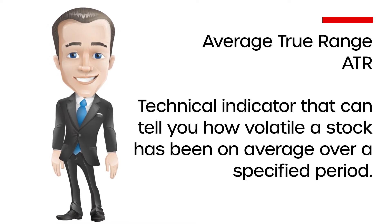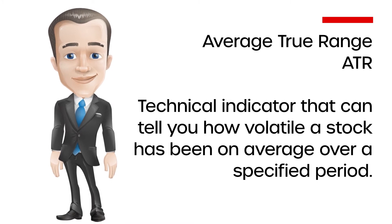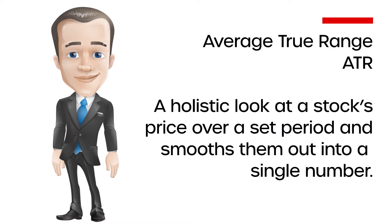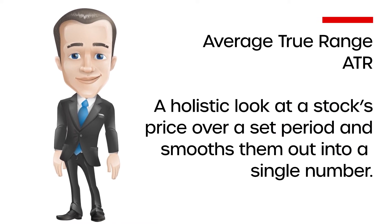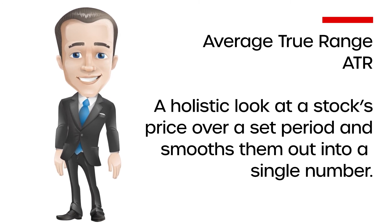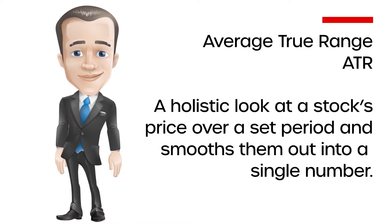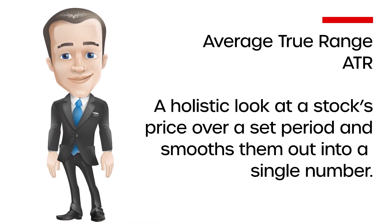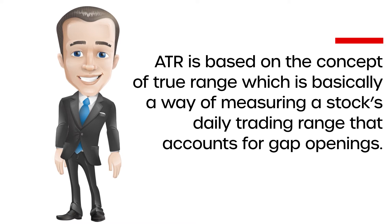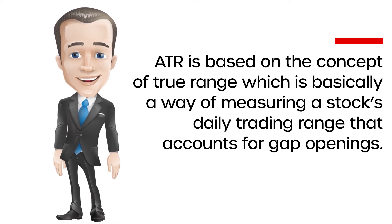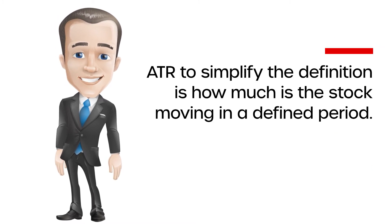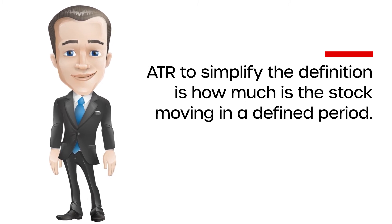Average True Range, or ATR, is a technical indicator that can tell you how volatile a stock has been on average over a specified period. ATR is used for setting exit levels as part of your risk management strategy. It can also give you a sense of how strong price moves are, which is helpful if you're trying to identify the start of a trend. In short, ATR takes a holistic look at a stock's price over a set period and smooths them out into a single number expressed as a dollar amount. ATR is based on the concept of true range, which is a way of measuring a stock's daily trading range that accounts for gap openings — when a stock opens sharply higher or lower relative to the previous day's closing price. To simplify: ATR is how much is the stock moving in a defined period.